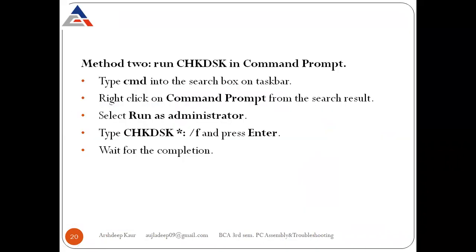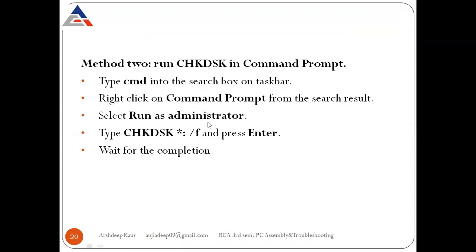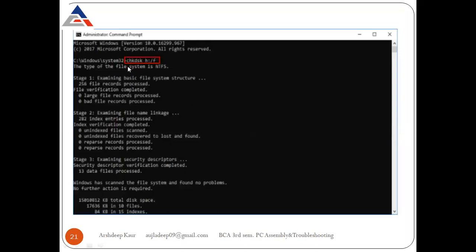Method two: check disk using Command Prompt. Type 'cmd' in the search box on the taskbar, right-click on Command Prompt, and select 'Run as administrator.' Then type the command: 'chkdsk H: /f' and press Enter. Wait for the completion. This type of file system is NTFS.